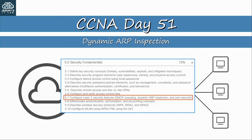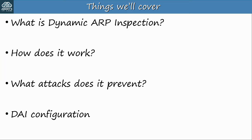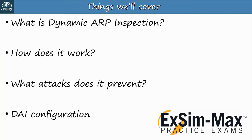Dynamic ARP Inspection is a security feature of switches which inspects ARP messages in a similar manner to how DHCP snooping inspects DHCP messages, so this video will follow a similar structure to the previous video. We'll cover what DAI is, how it works, what attacks it prevents, and how to configure it. Watch until the end for a bonus practice question from Boson Software's ExSim for CCNA, my recommended practice exams.